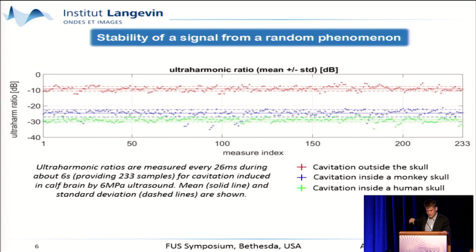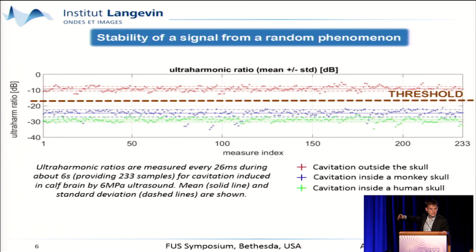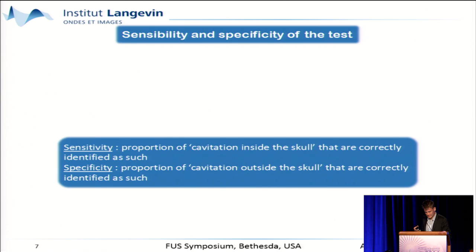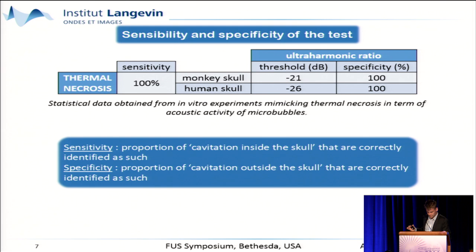Finally, in order to assess the efficiency of our test, we evaluated its sensitivity and specificity. In vitro, it works perfectly — it is possible to find a threshold to obtain simultaneously 100% sensitivity and 100% specificity. But to go further, we will need to reproduce this test in vivo.